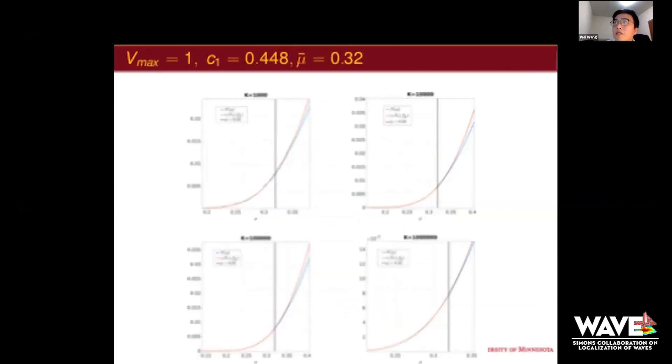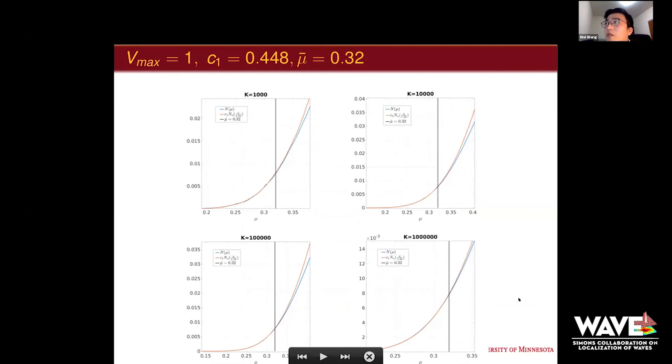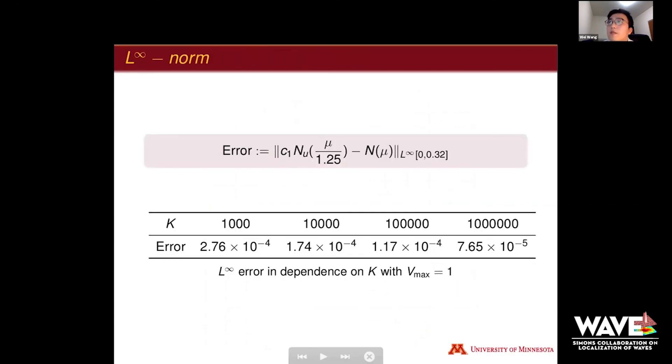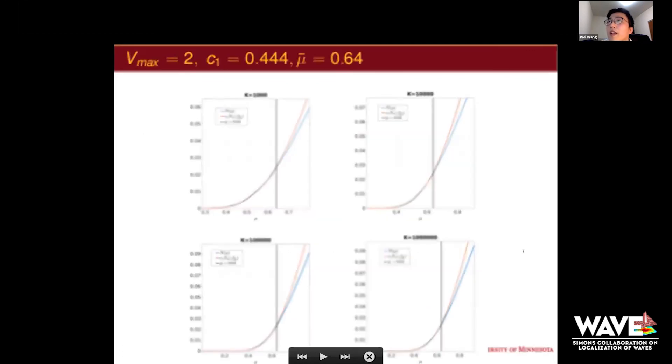Next we show different sizes K from 1,000 to actually 1,000,000. We found similar behaviors. We use the same vertical line, μ_bar is 0.32. We find that before that, it matches very well, after that it gives some little difference. That means it's quite independent of the matrix size k. We give more detailed data here, measuring the infinity norm between the two curves between zero and 0.32. For different size k from 1,000 to 1,000,000, we find that most of the error is almost kept at the same level, tending to 10^-4, except the last one is smaller.